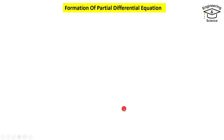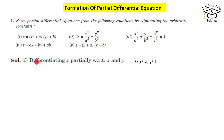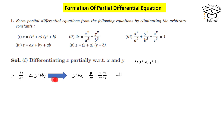Let's solve two examples. For example one, if we differentiate the relation z with respect to x, we get p equal to partial z with respect to x equal to 2xy squared plus b. Then y squared plus b equals p over 2x, where p equals partial z with respect to x.